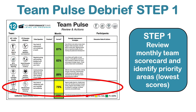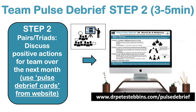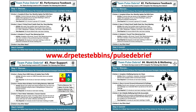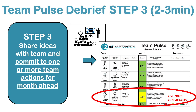In the example you can see here, KPI 4 — Work Life Wellbeing — is our lowest. So we head to step two and click on the website to pull up example actions we could use. We have a pairs discussion, coming up with one or two ideas as a whole team we could commit to. Depending on which of the four parts of team health is our lowest, we look at different prompt cards on the website. Finally, we share ideas back with the team, commit to one or more team actions for the month ahead, and write that down so we're accountable on our team pulse scorecard.